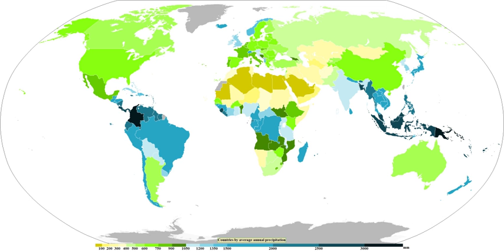Humid subtropical climates lie on the east side of continents, roughly between latitudes 20 and 40 degrees from the equator. An oceanic climate is typically found along the west coasts at the middle latitudes of all the world's continents, bordering cool oceans, and is accompanied by plentiful precipitation year-round. The Mediterranean climate regime is characterized by hot, dry summers and cool, wet winters. A steppe is a dry grassland. Subarctic climates are cold with continuous permafrost and little precipitation.